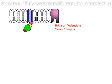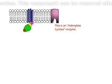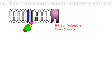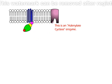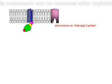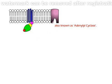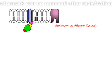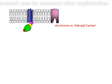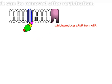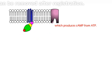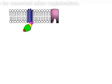This is an adenylate cyclase enzyme. The function of this enzyme is that it converts ATP to cyclic AMP.